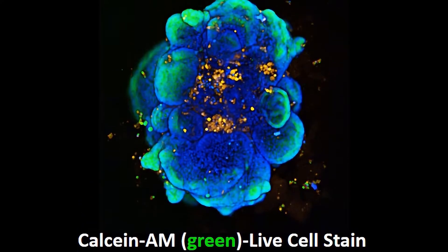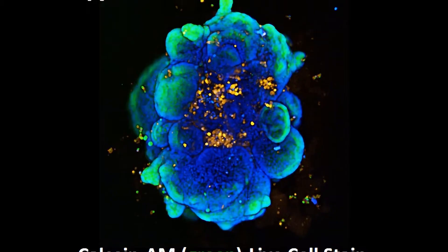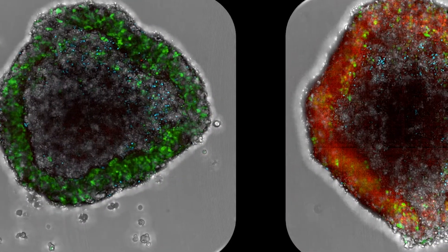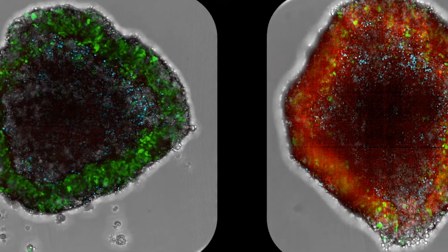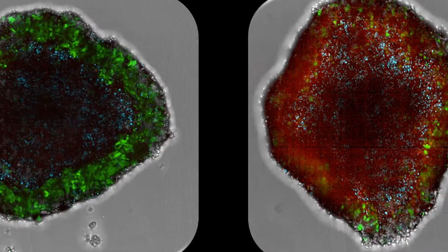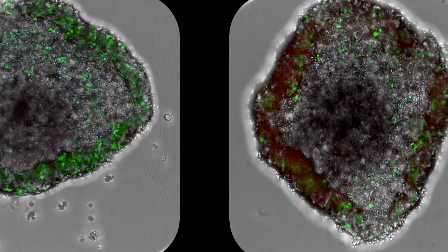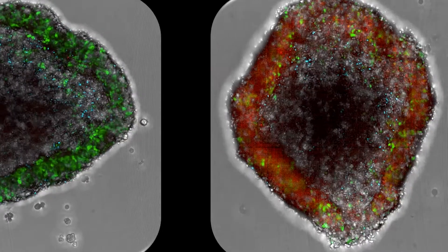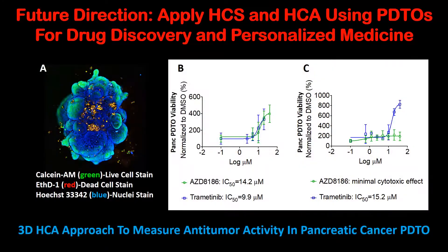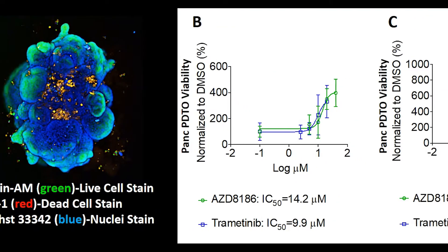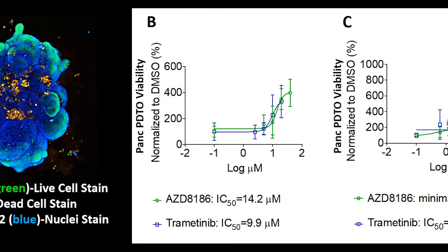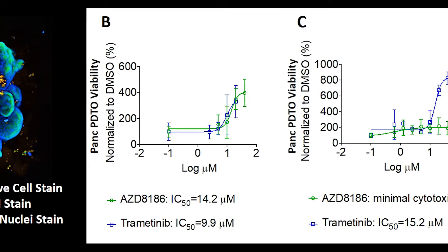We then use those dyes to quantitate a drug or drug combination's effects against an individual patient-derived tumor. In this example, we've cultured two different patient tumor organoids and tested them with two clinically relevant drugs.